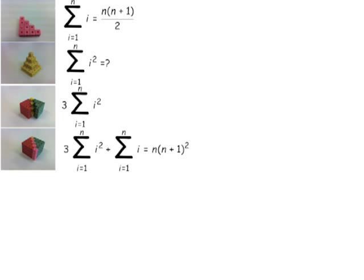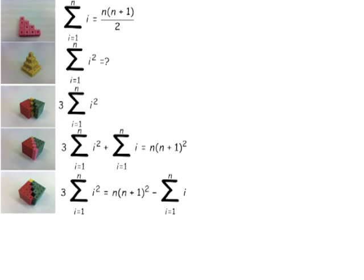Notice the n is the height of this prism, and the n plus one squared is the area of the top. So three times the sum of i squared, or the pyramid itself, all I have to do is subtract the sum of i from both sides and then replace the sum of i with n times n plus one over two. And then neatly I can see n and n times n plus one as a common factor, so I can take that out the front and I'm left with n plus one minus a half.